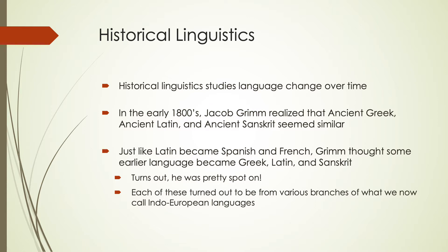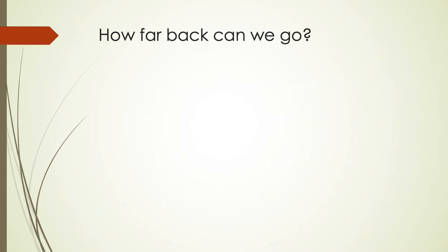Each of these turned out to be various branches of what we now call Indo-European languages, and he was getting into the beginnings of determining what that Indo-European language prior to these branches would have looked like. One question that's very important when thinking about historical linguistic aspects is how far back we can go for what we can determine and reconstruct. This depends largely on what kind of documentation we have, if we have any. Many languages don't have any writing at all.